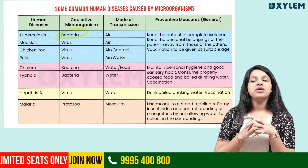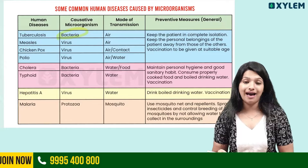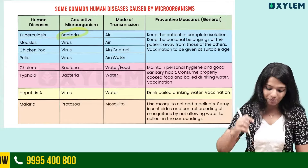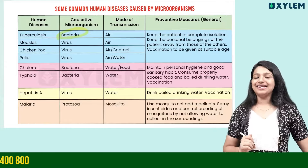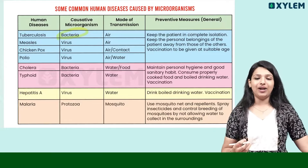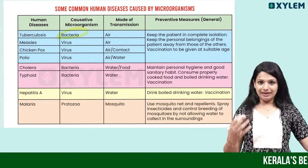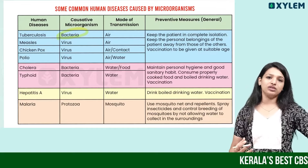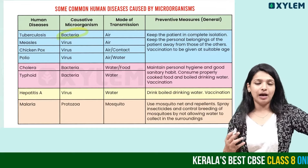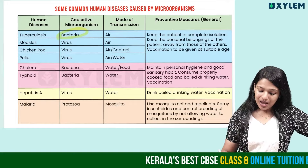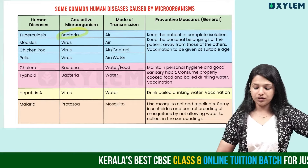You can use boiled drinking water and get vaccinated. Next: Hepatitis A. The causative organism is Hepatitis A virus. It is spread through contaminated water. Prevention: drink boiled water.